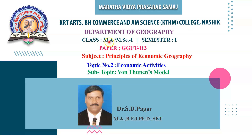Dear students, this is our MA MSc Part First, Semester First class. In this class, we are going to discuss our paper. The code of our paper is GGUT113. The title of our course is Principles of Economic Geography. Today, we are going to discuss the last subtopic of our chapter number two, that is Economic Activity — specifically, Van Thünen's Model.